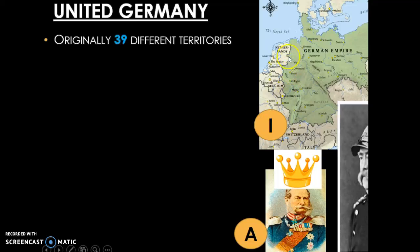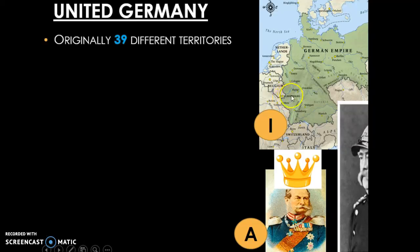Most of us are familiar with Germany being this big united country. But before it was united, it actually used to be a bunch of tiny little territories — we can see them here in yellow — who were German, but they were not united, and they didn't want to unite or cooperate. They kind of just did their own thing.